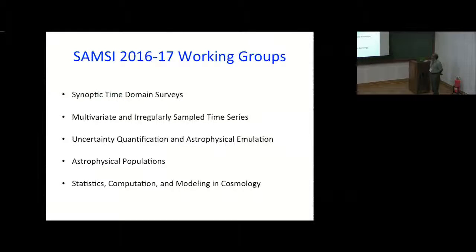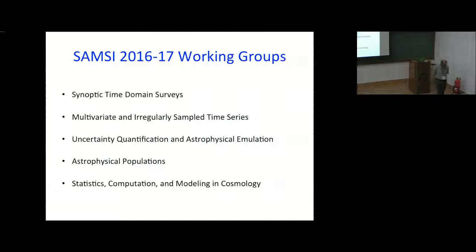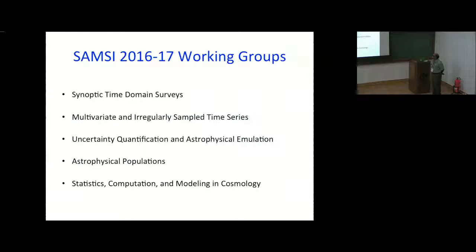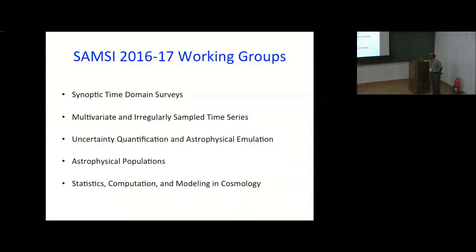Among other working groups, we started with quite a few — some are active, some less so. One of the biggest is the time domain synoptic surveys group. There is also multivariate and irregularly sampled time series, which is helpful in gravitational wave research; uncertainty quantification and astrophysical emulation; astrophysical populations, which covers exoplanets and other things; and statistics and computation for cosmology.